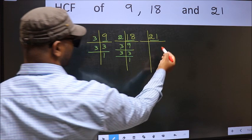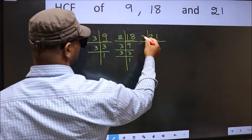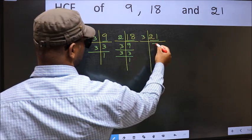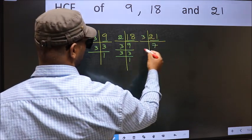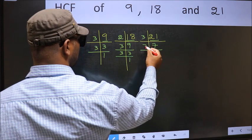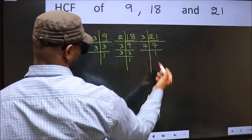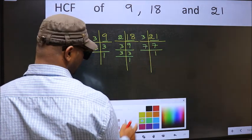Now the other number, 21. 21 is 3 times 7. 7 is a prime number, so 7 times 1 is 7.